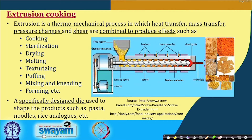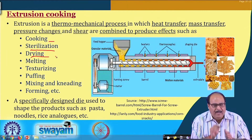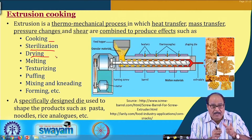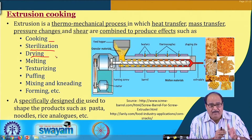Just to refresh your memories, we have seen in Part 1 of this topic that extrusion is a thermo-mechanical process in which heat transfer, mass transfer, pressure changes and shear are combined to produce effects such as cooking, sterilization, drying, melting, texturization, puffing, mixing and kneading, forming, etcetera.